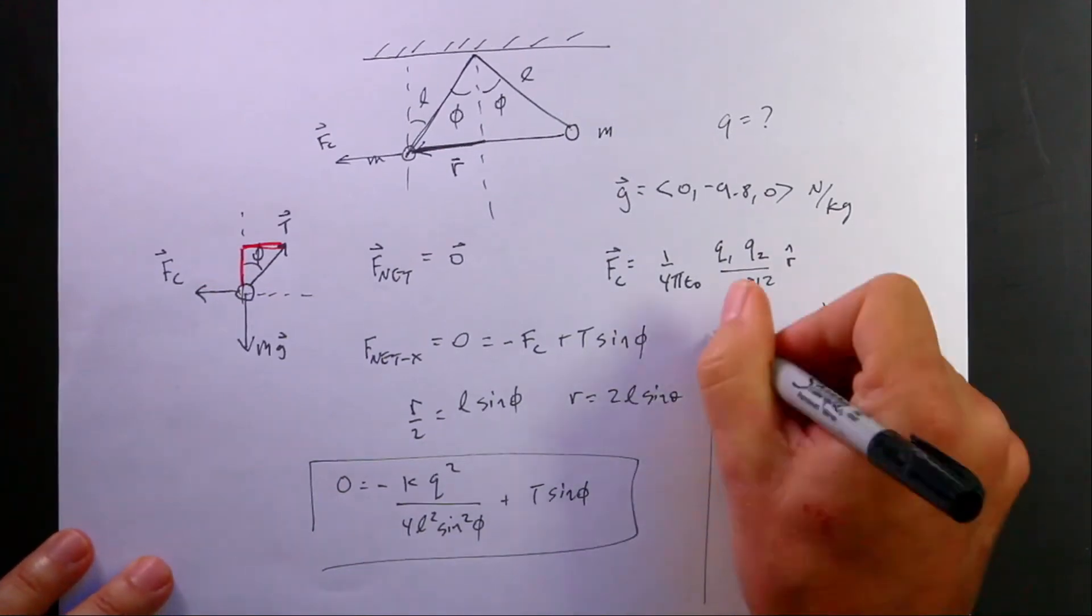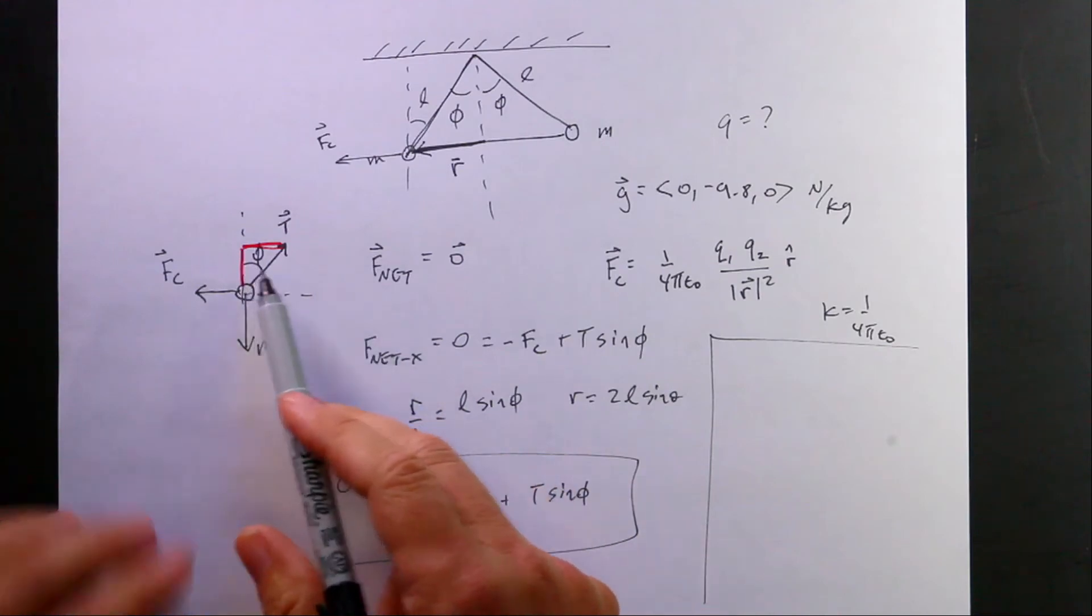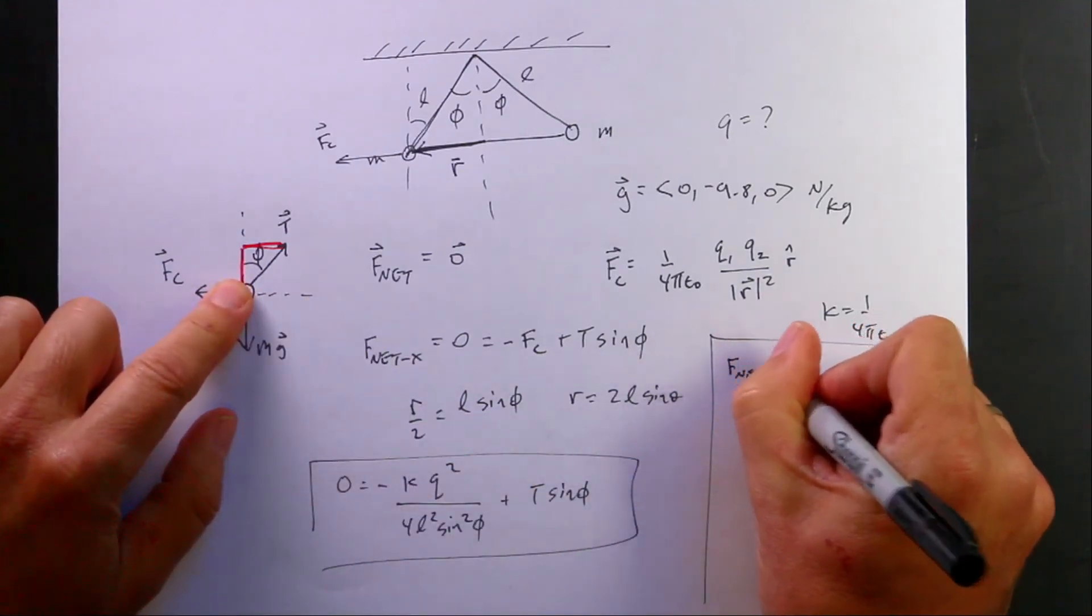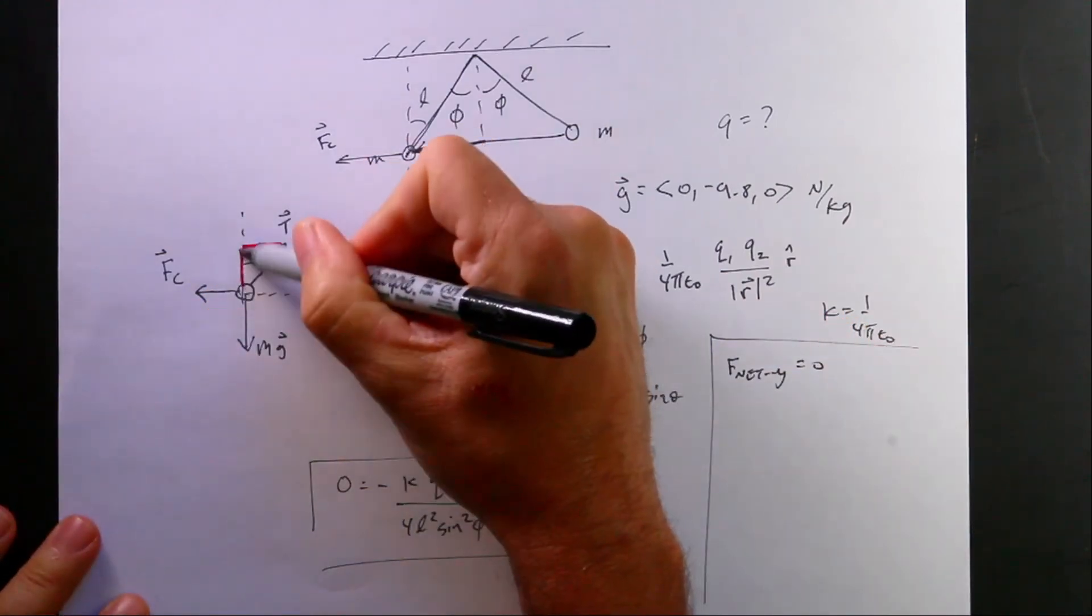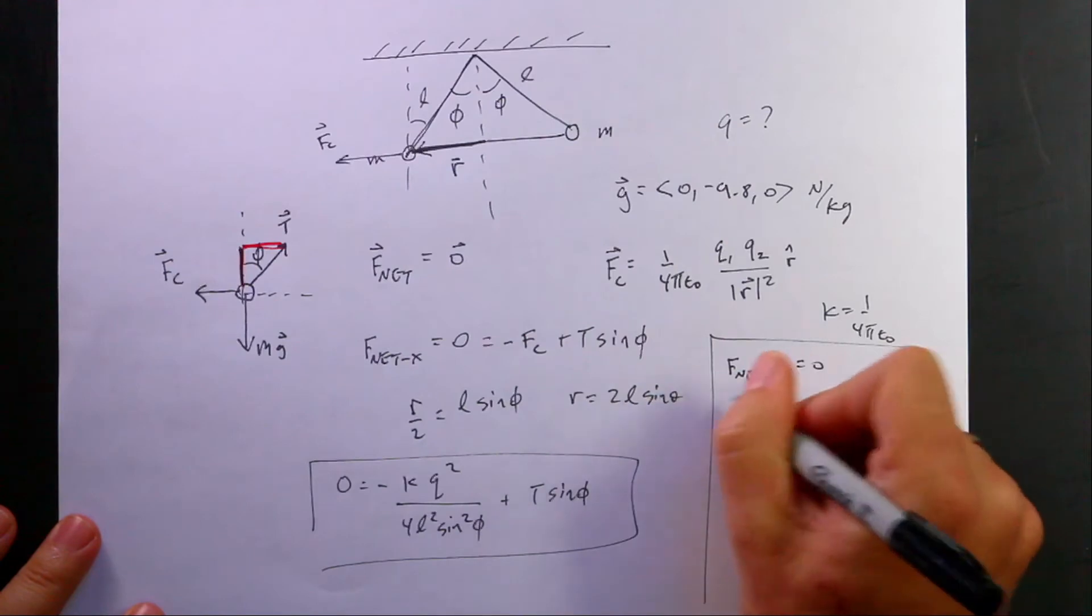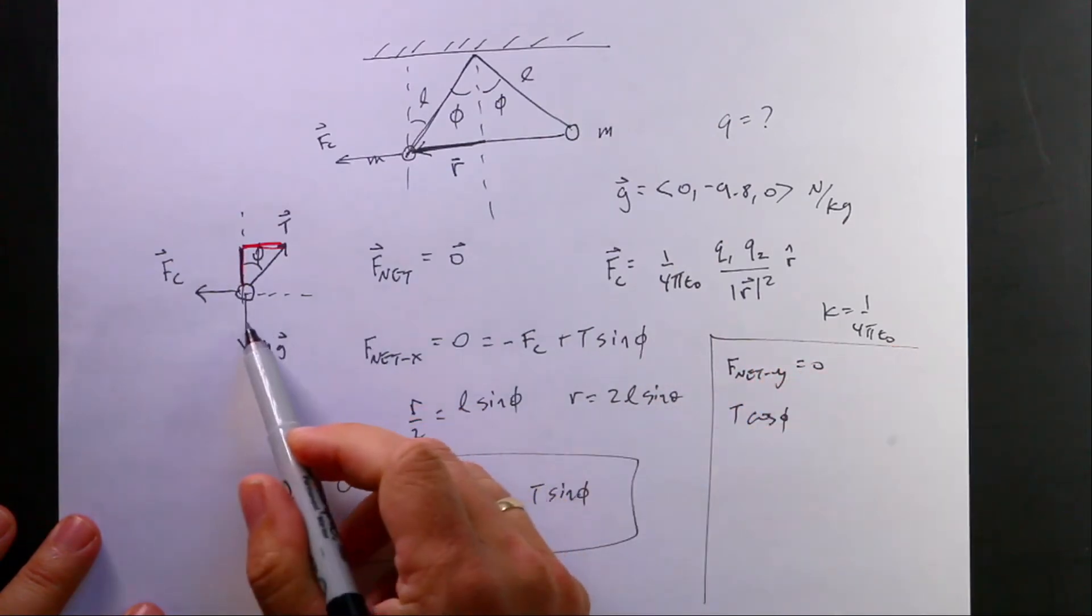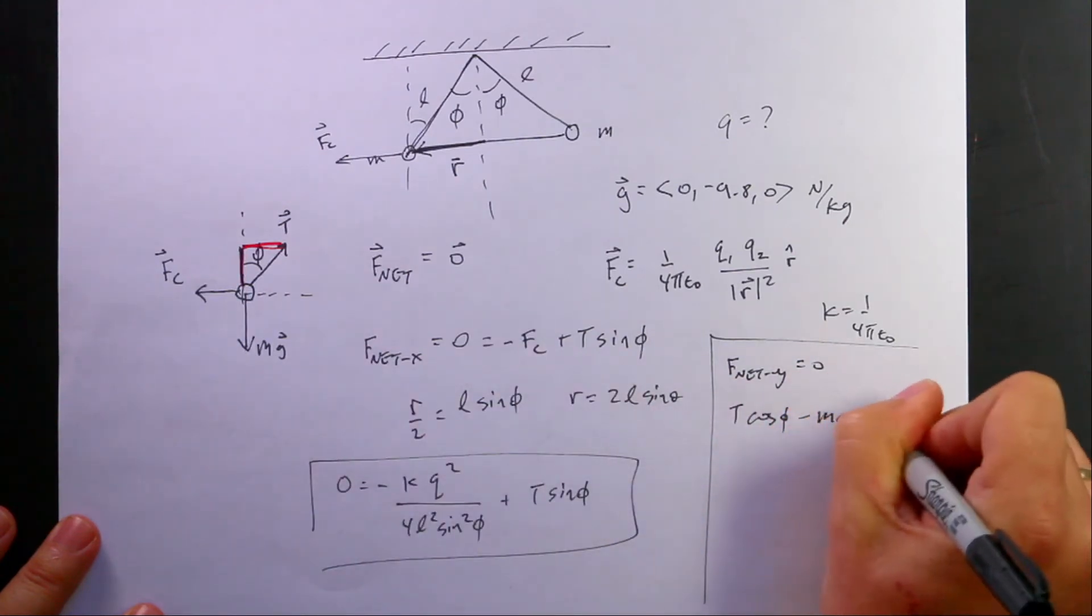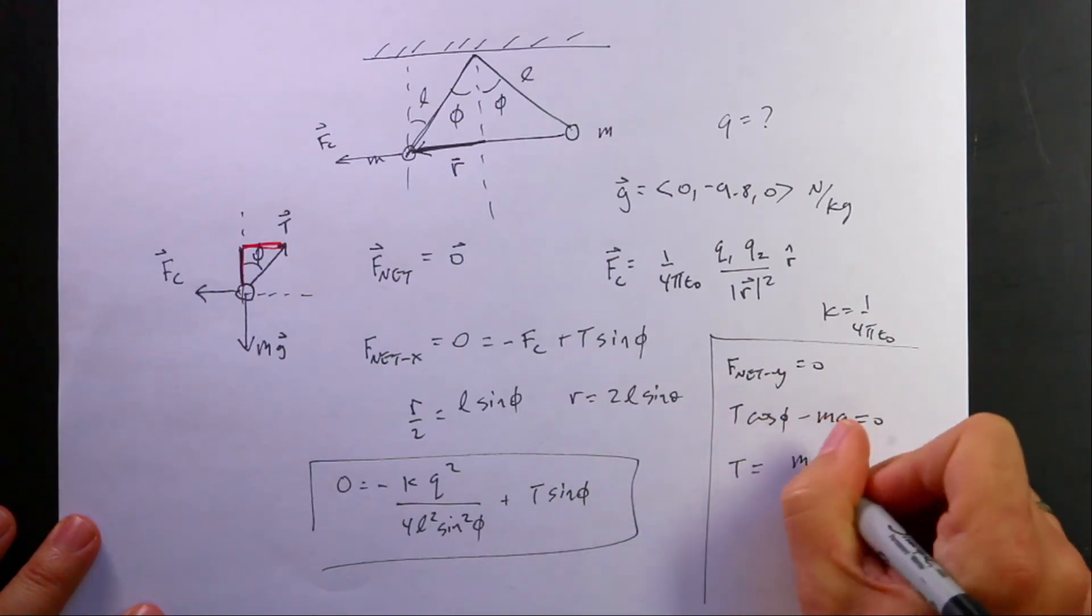So let's go over to the Y equation. So in the Y direction, I have F net Y equals 0. So I have the horizontal, I mean the vertical component of the tension is going to be T cosine phi. And then I have in the Y direction is negative Mg. So from this I can find T. T is going to be equal to Mg divided by the cosine of phi.